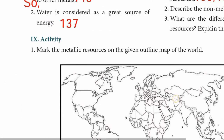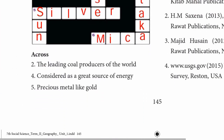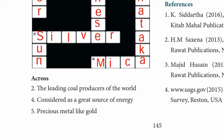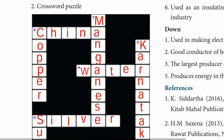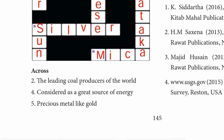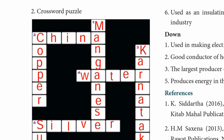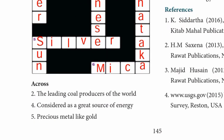Now the crossword puzzle - Roman numeral 9 activity. Across, second one: the leading coal producers of the world - the answer is China. Fourth one: considered as a great source of energy - the answer is Water, W-A-T-E-R. Fifth one: precious metal like gold - the answer is Silver, S-I-L-V-E-R.